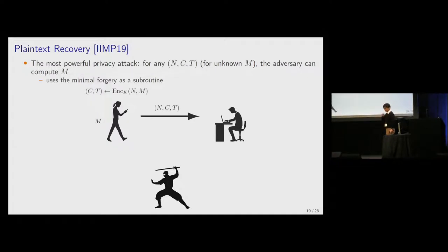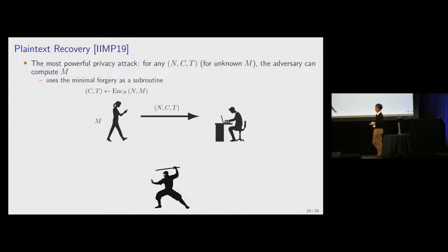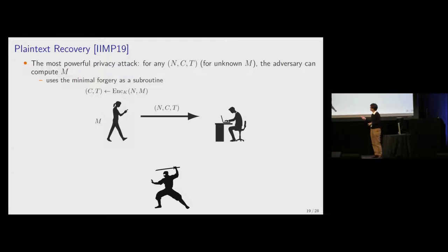Plaintext recovery is an attack on privacy. There is a message M not known to the adversary initially. Alice encrypts it into (C, T) and sends (N, C, T) to Bob. By using the minimal forgery as a subroutine, the adversary can recover the entire content of the message. This means OCB2 does not provide the functionality of encryption.